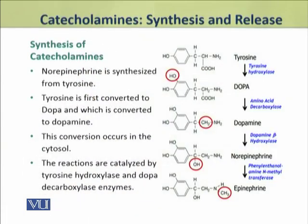The catecholamines, which include epinephrine and norepinephrine, are synthesized from tyrosine. Tyrosine is first converted into norepinephrine through a chain of reactions, involving first transformation into DOPA, then this DOPA is transformed into dopamine.